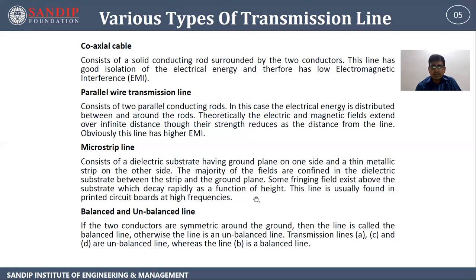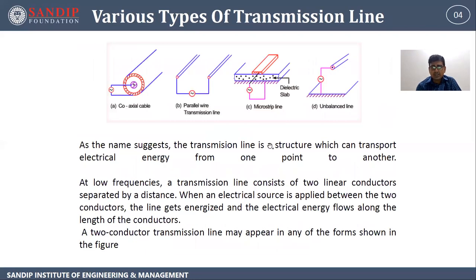Balanced and unbalanced lines: if the two conductors are symmetric around the ground, then the line is called a balanced line; otherwise, the line is an unbalanced line. Transmission lines A, C, D are unbalanced lines, whereas line B is a balanced line, as shown in the figure.